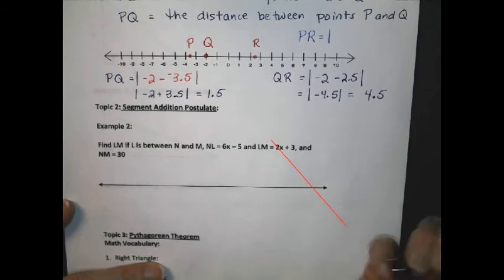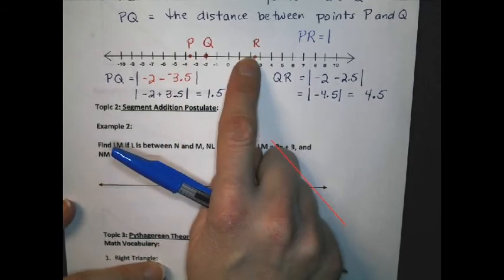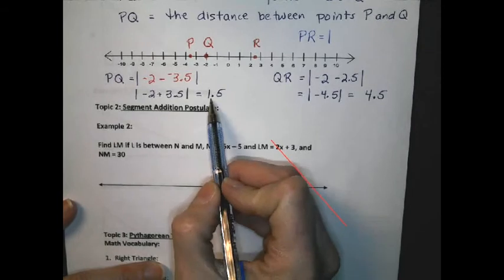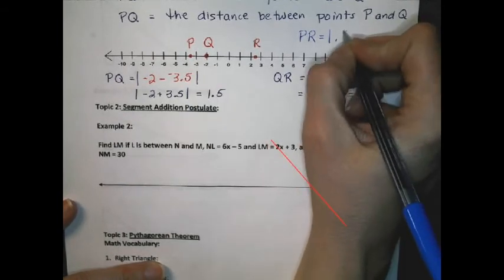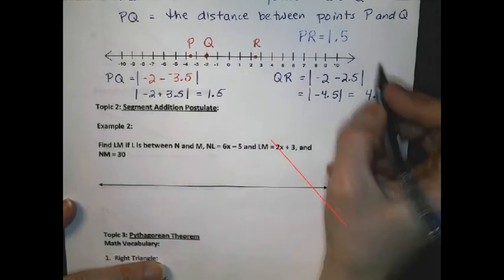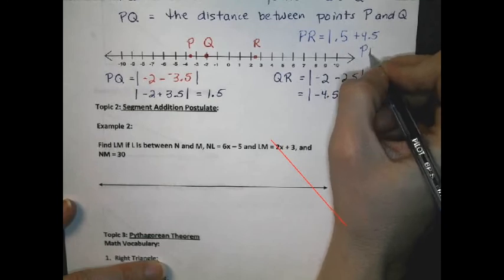Next, to find the distance PR, which is the distance from the point P to R, I'm going to use something called segment addition. I'm going to add the distance from P to Q, which is 1.5, to the distance between Q and R, which was 4.5. And I find out that the distance PR equals 6.